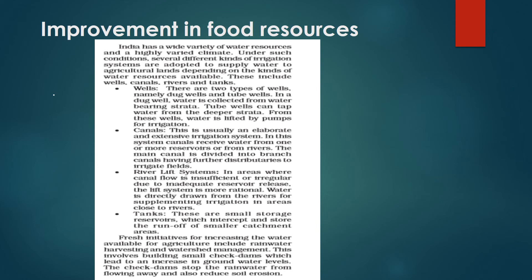Another source is tanks. These are small storage reservoirs which intercept and store the runoff of smaller catchment areas. Fresh initiatives for increasing water available for agriculture include rainwater harvesting and watershed management. This involves building small check dams which lead to an increase in groundwater levels, and also reduce soil erosion by stopping rainwater from flowing away.